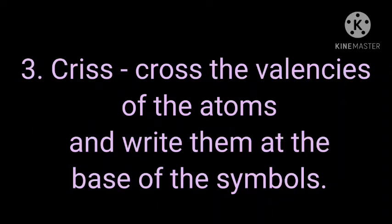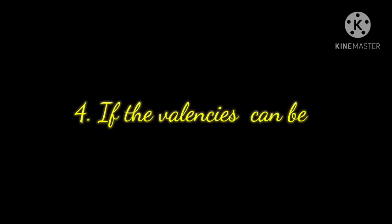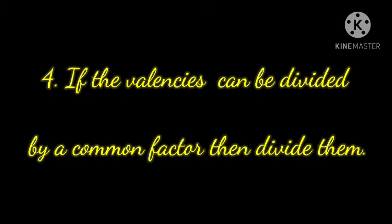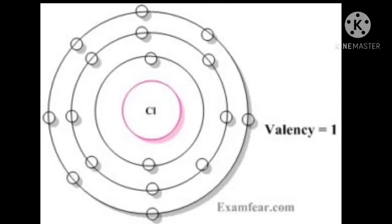We have to check if the valencies can be divided by a common factor, then divide them. Otherwise, retain the valencies as such. So these are the four steps which should be followed for writing a chemical formula.